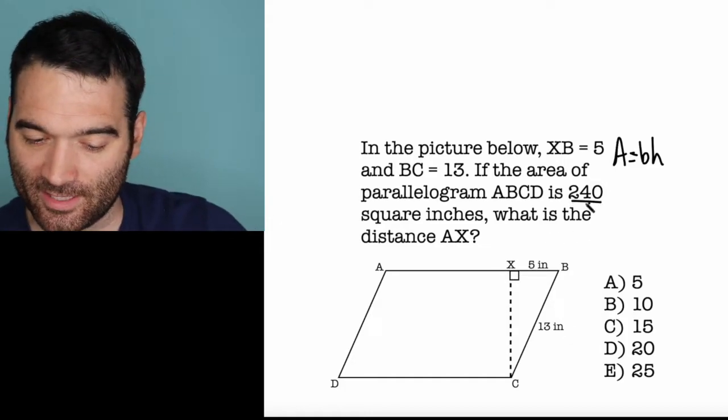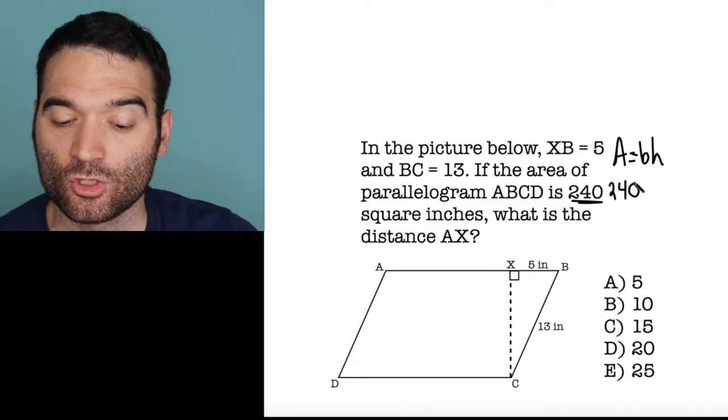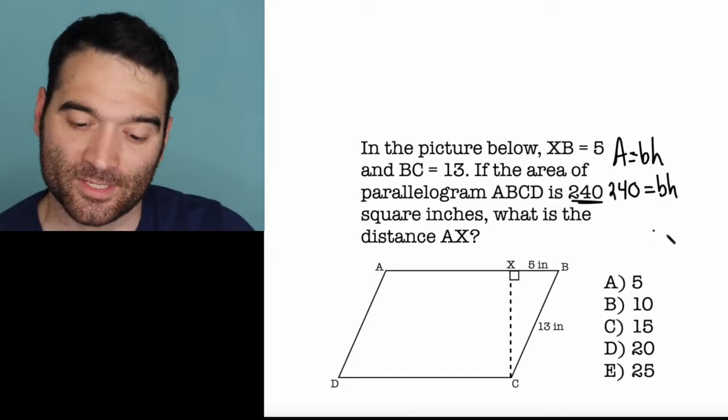We know that the area it tells us is 240 square inches. So let's plug that in right there. We're told that 240 equals B times H.